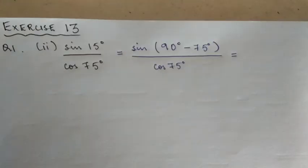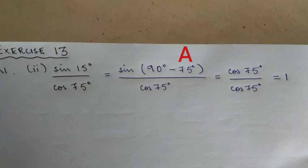Using the formula, sin(90° - 75°) = cos 75°. So we have cos 75° divided by cos 75°, which equals 1. And that will be the final answer.